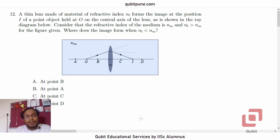a thin lens made of material of refractive index NL forms the image at the position I of a point object held at O on the central axis of the lens as is shown in the ray diagram below. This is our object,